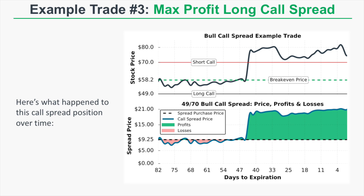At expiration the stock price remained above the short call strike of $70, and the spread expired at its full value of $21, realizing the maximum profit of $1,175. However, you did not need to hold to expiration. Right after the initial stock price surge, anyone holding this spread could have sold it early near its $21 maximum value. With 45 days still remaining, waiting to pick up the last few pennies isn't worth the risk of the stock collapsing and turning a full winner into a loser.